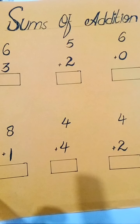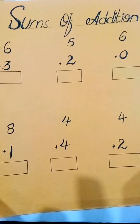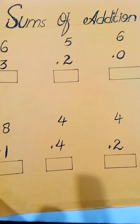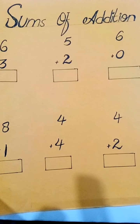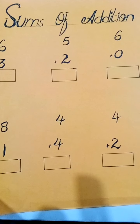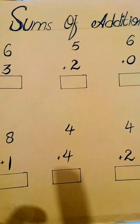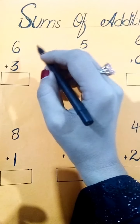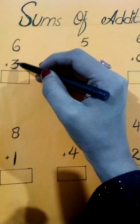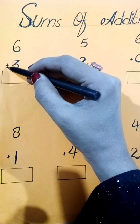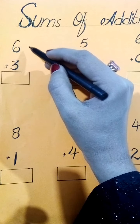यहां पर addition के questions हैं। Addition means to add numbers — addition का मतलब है numbers को add करना, यानि कि उनको जमा करना। यहां पर हमारे पास 6 है और 3 है। 6 के साथ plus का sign है जिसका मतलब होता है add करना। तो 6 है, आपने यहां पर 6 dots लगाने हैं।